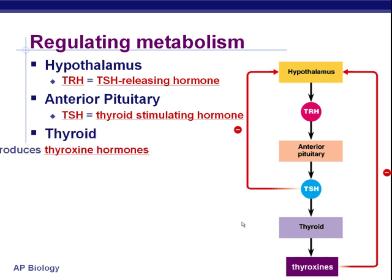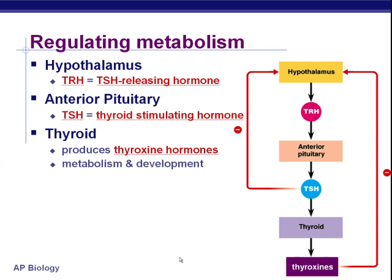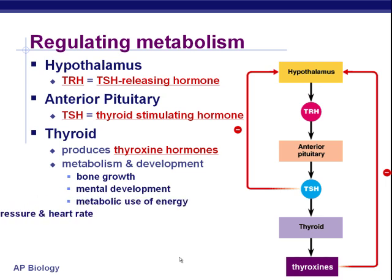The thyroid gland is in your throat area, and it produces hormones called thyroxine hormones. They have tremendous roles in how you metabolize nutrients and your development. Bone growth is affected by them, your mental development is affected by them, how you use energy, your blood pressure, your heart rate — a myriad of really important processes are controlled by these thyroxine hormones.